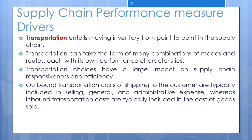Transportation moves product between different stages in the supply chain. Like other supply chain drivers, transportation has a large impact on both responsiveness and efficiency. Faster transportation allows a supply chain to be more responsive but reduces its efficiency. The type of transportation a company uses also affects inventory and facility location. For example, Dell flies some components from Asia because doing so allows the company to hold a lower level of inventory, increasing responsiveness but decreasing transportation efficiency since air freight is more costly than importing parts by ship.